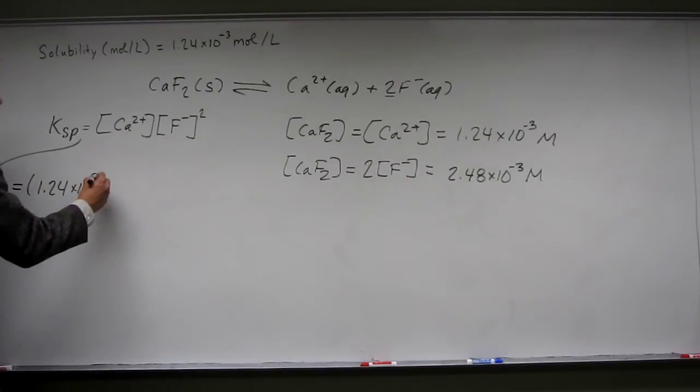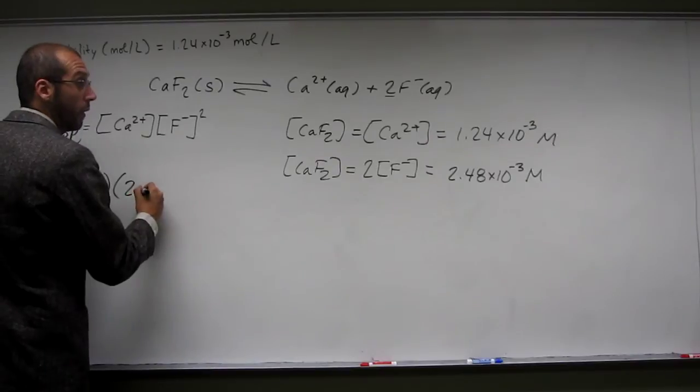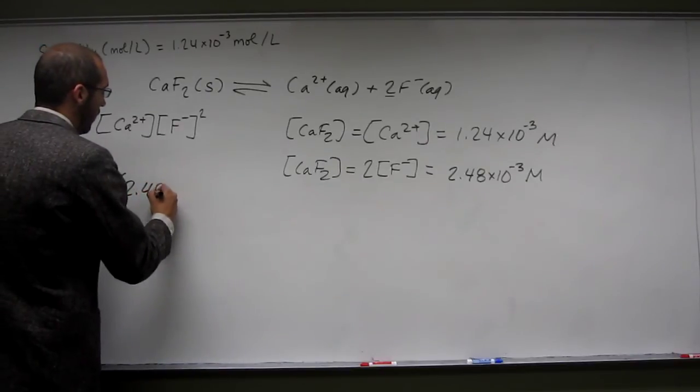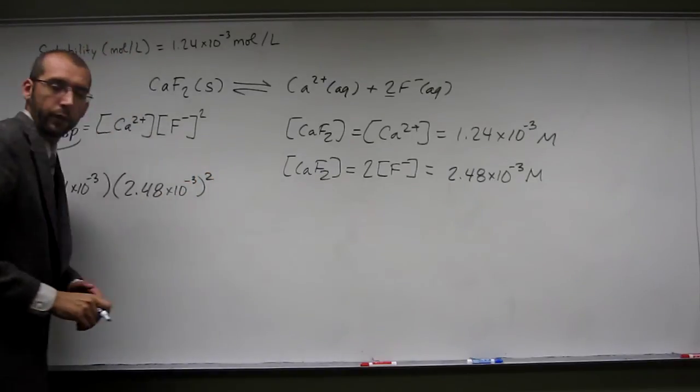So 2.48 times 10 to the negative third squared. Now just get out your calculator.